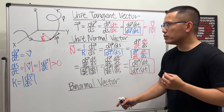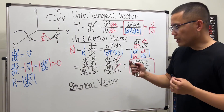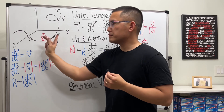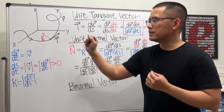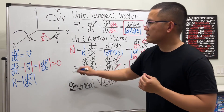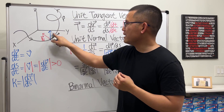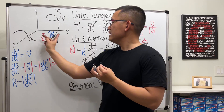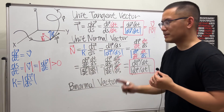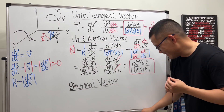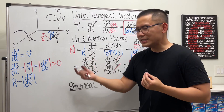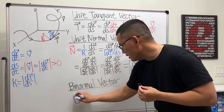Finally, the binormal vector B is a vector normal to both T and N. Using the right-hand rule: the index finger is T, the middle finger is N, and the thumb gives B. So B is defined as T cross N, in that order.